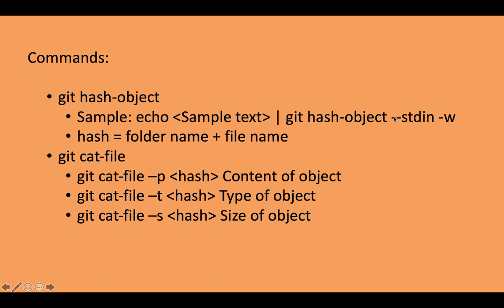There is a sample command: echo followed by content, then a pipe symbol, then the command git hash-object, then --stdin and -w. I'll explain why we're using all these options and what they mean.